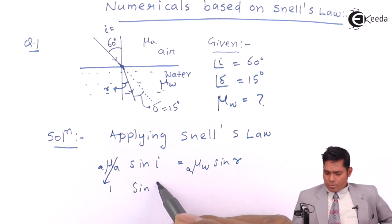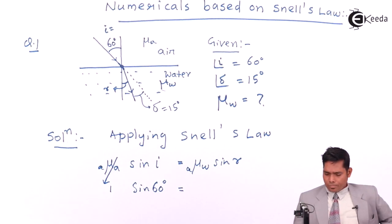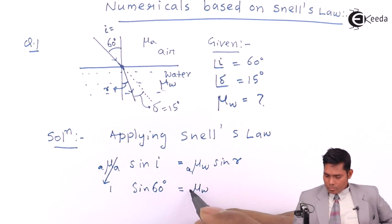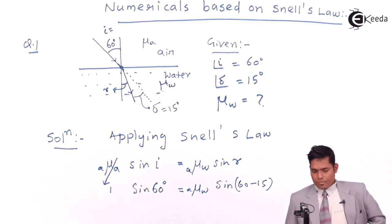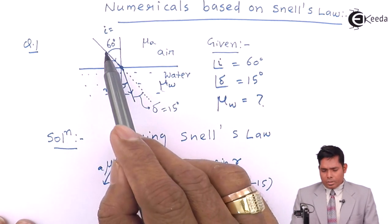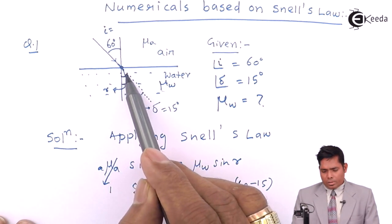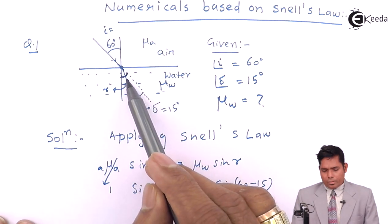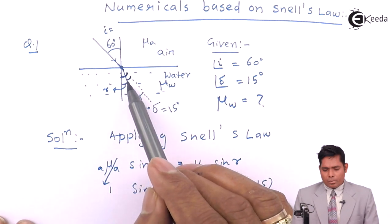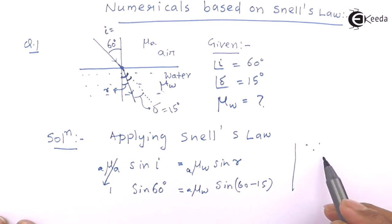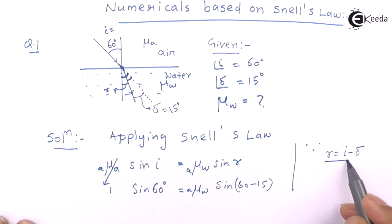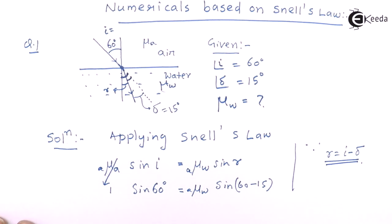This is sine of 60 degrees. How come is this? This angle is 60, so therefore this angle will also be 60. From this I will subtract this angle, which is 15 degrees. So there is a remaining angle, R is 60 minus 15, that is I minus delta. Therefore, this is 45.